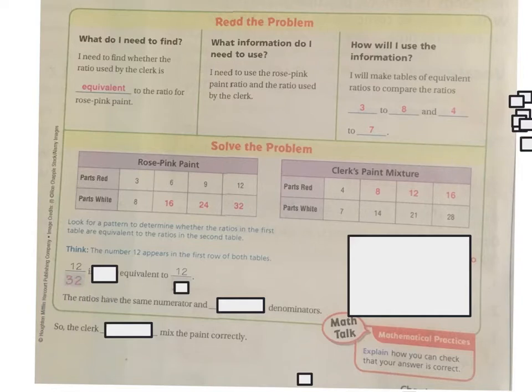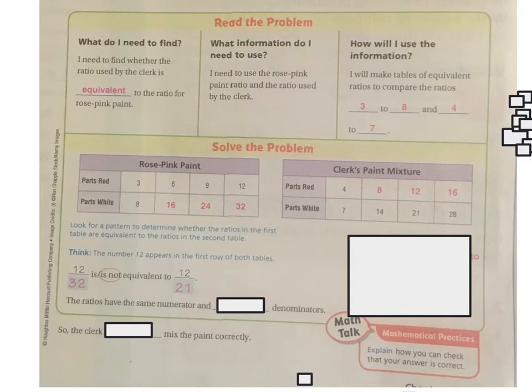So twelve thirty-twos. Here I am with my twelve and my thirty-twos. Twelve thirty-twos is not equivalent to twelve twenty-ones. I can't do twelve twenty-ones and twelve thirty-twos. They're not the same. So the ratios have the same numerator, but they have different denominators. So the clerk did not mix the paint correctly. Just like the Kool-Aid that we made yesterday. If we mixed more sugar or less sugar, it was going to taste very differently. It would taste better or worse if we did the ratio incorrectly.